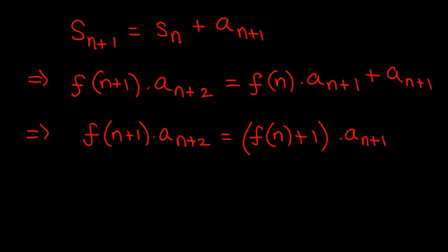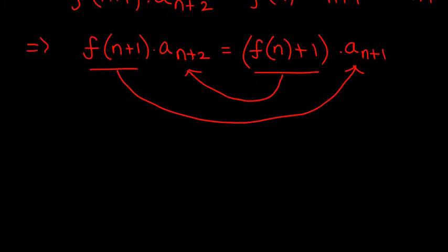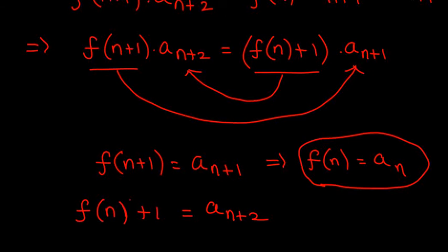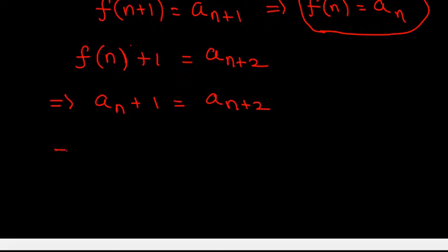This gives f(n+1) times a_{n+2} equals f(n) plus 1 times a_{n+1}. Now f(n) can be any function, and we try to find a simpler one. One possibility is f(n+1) equals a_{n+1} and f(n+1) equals a_{n+2}. We don't know whether this is possible; let us check. So f(n) equals a_n, giving us a nice recurrence relation: a_{n+2} equals a_{n+1}.